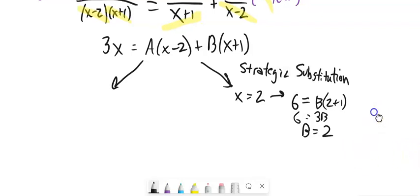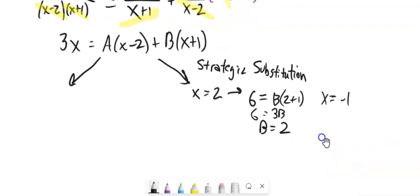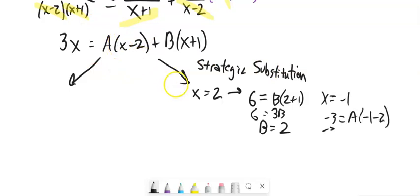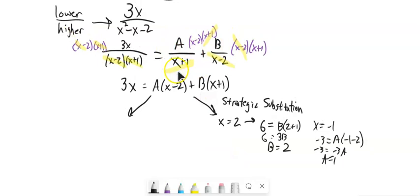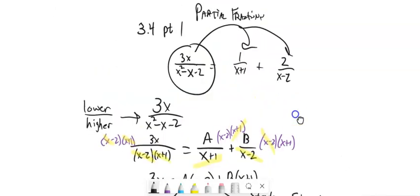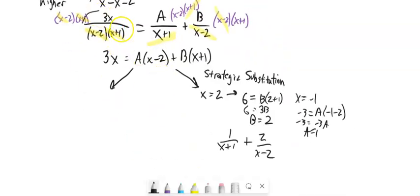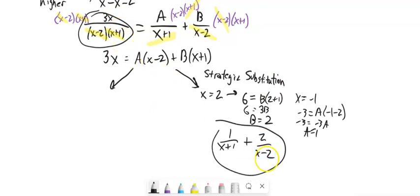My next strategic substitution uses the same idea — make it so the other part cancels. Let x equal negative 1. On the right, x plus 1 goes to 0, so that's gone. On the left, 3 times negative 1 is negative 3. Plugging negative 1 into a times x minus 2: negative 1 minus 2 is negative 3. So negative 3 equals negative 3a, meaning a equals 1. Going back to the original setup: 1 over x plus 1 plus 2 over x minus 2, which is exactly what I said it would be.